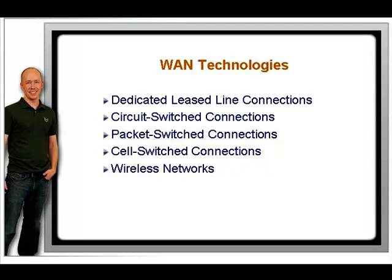A circuit-switched WAN uses the phone company as the service provider, either with analog dial-up or digital ISDN connections. With circuit switching, if you need to connect to the remote LAN, a call is dialed and a circuit is established. The data is sent across the circuit and the circuit is taken down when it is no longer needed. Circuit-switched WANs usually use PPP, HDLC, or SLIP, and they tend to be really slow — anywhere from 19.2K for analog dial-up to 128K for ISDN using a basic rate interface. They can also get expensive because most contracts specify a pay-per-usage billing.